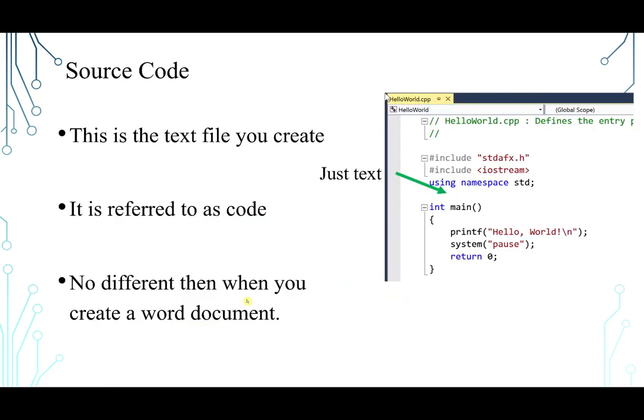This is the build process that starts with a source code. So basically this is a text file you create. It's something in plain English, something that has words that you can understand, like using, namespace, include, print, and so on. So this is referred to as code. And it's no different than when you create a word document. As you can see, this is in English and you can understand it.